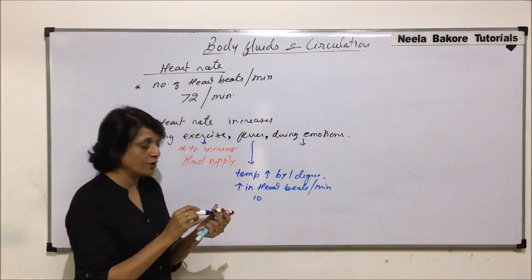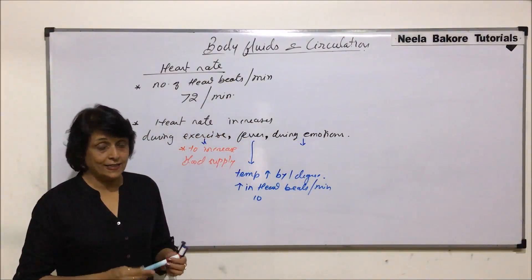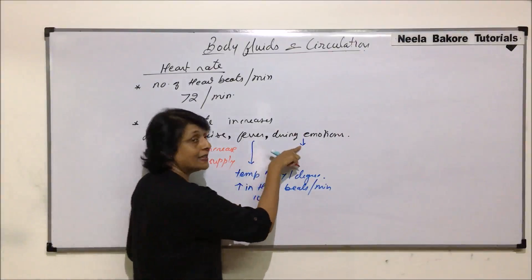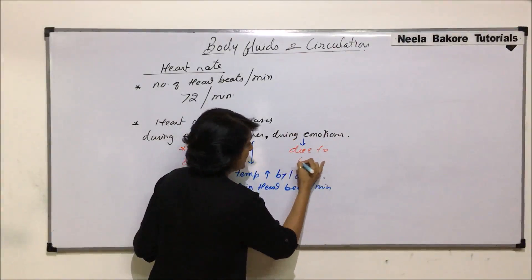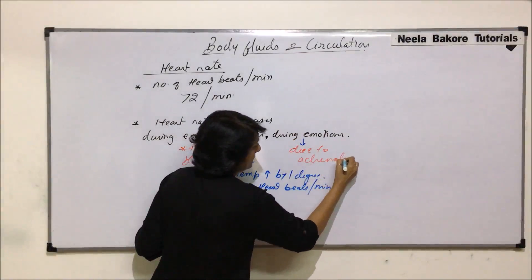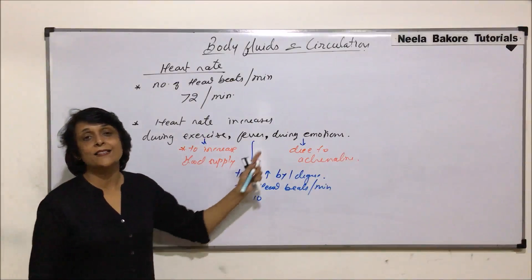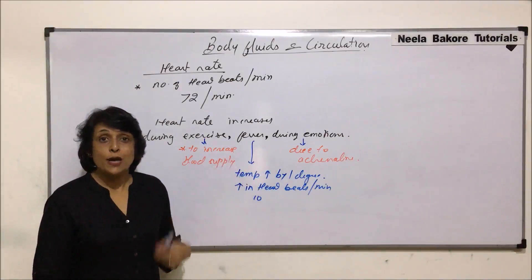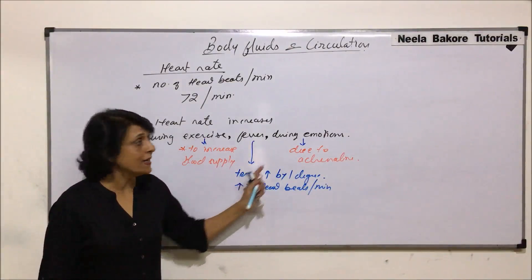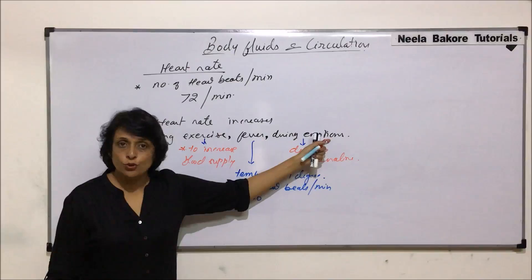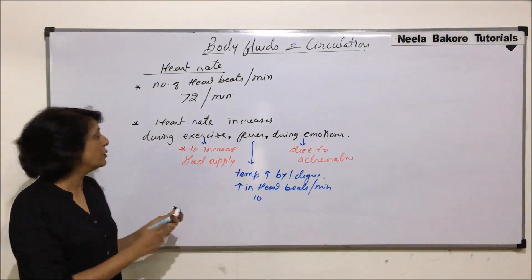During emotions like anger or fear, adrenaline is released, and this increase in heart rate is due to adrenaline. Adrenaline is a neurotransmitter as well as a hormone. So our nervous system also regulates our heartbeat during certain emotions. These are the conditions when the heart rate increases.